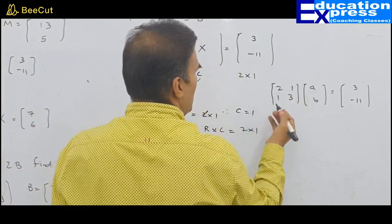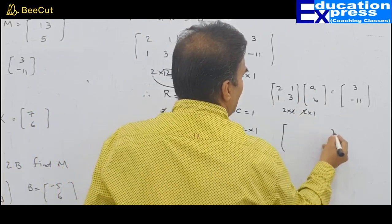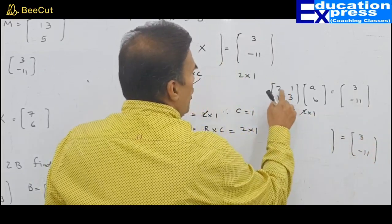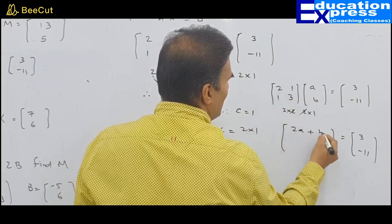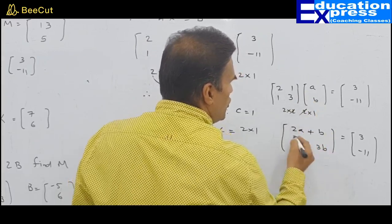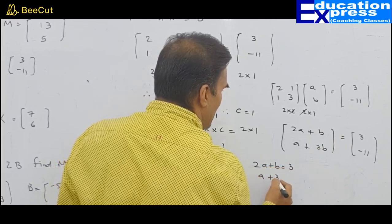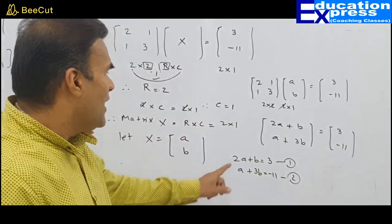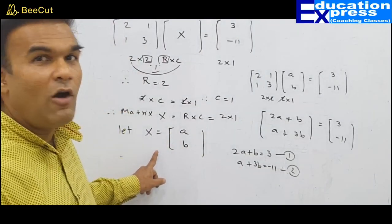The resulting matrix is 3 and minus 11 — order 2 row and 1 column. Since the inner dimensions must match, R equals 2. And 2 into C equals 2 into 1, so C equals 1. Therefore matrix X is of order 2 into 1. Let X be [A, B]. Multiplying: 2A plus B equals 3, and A plus 3B equals minus 11. Apply simultaneous equations to get the values of A and B, substitute, and find X.